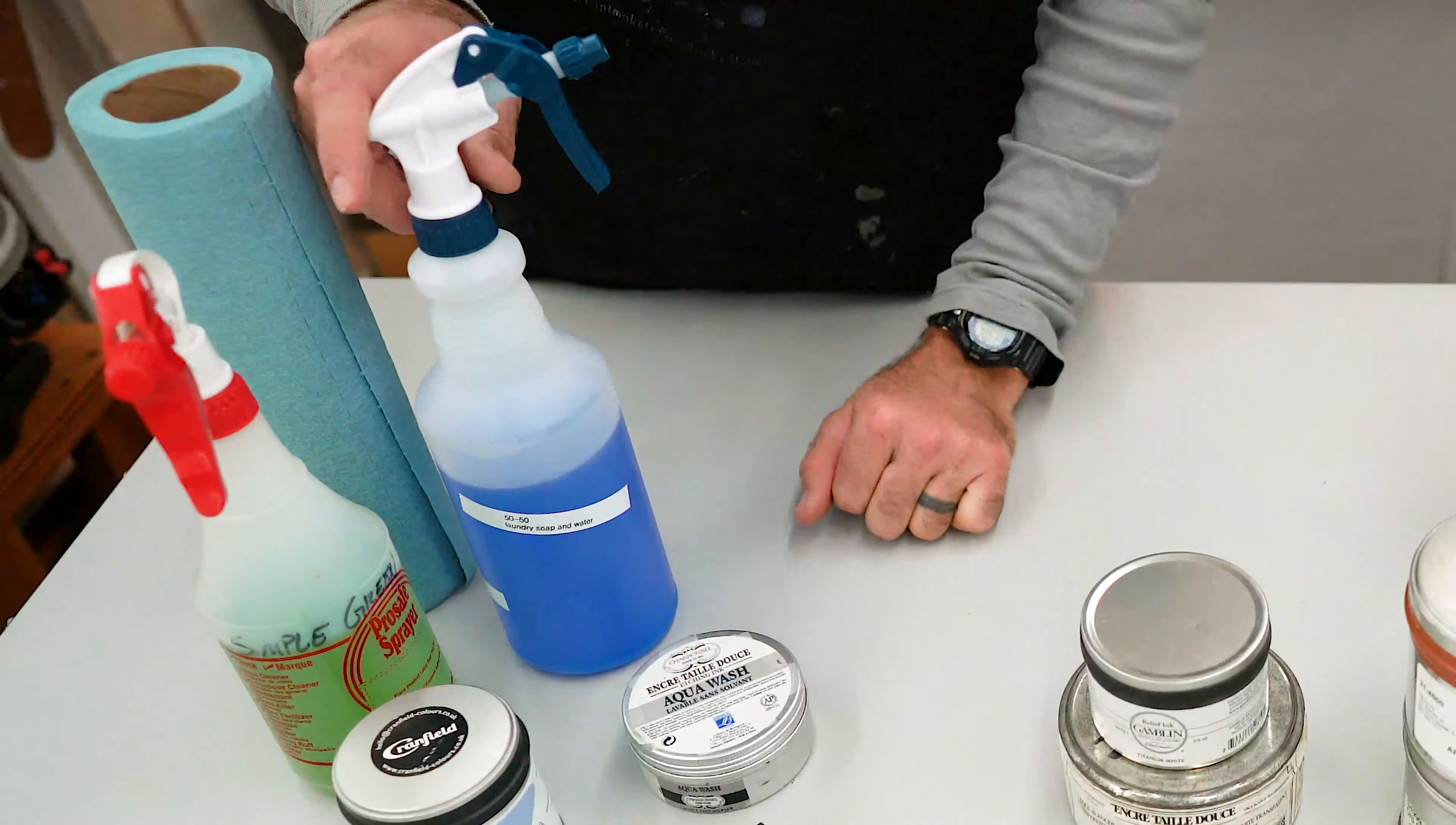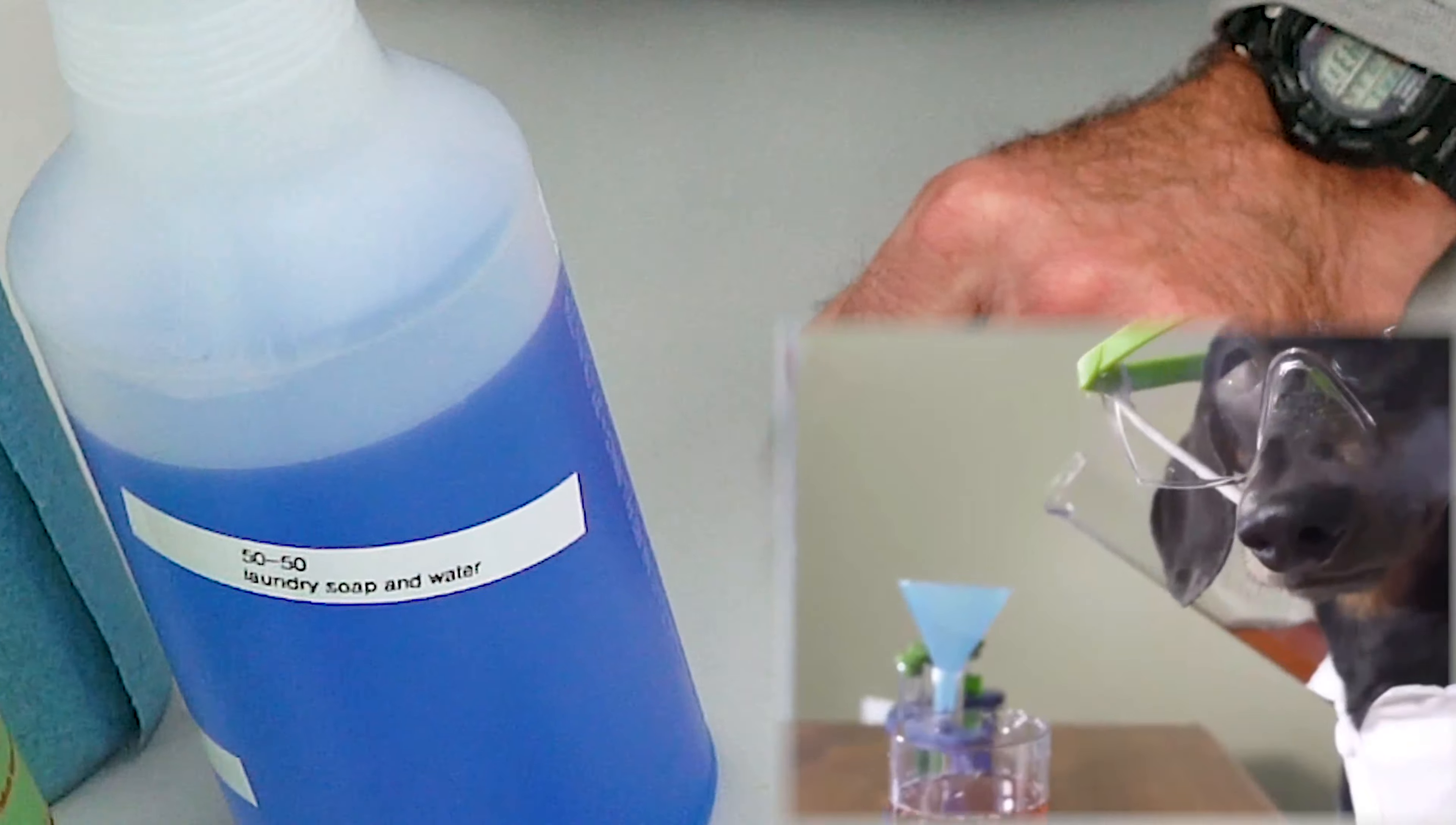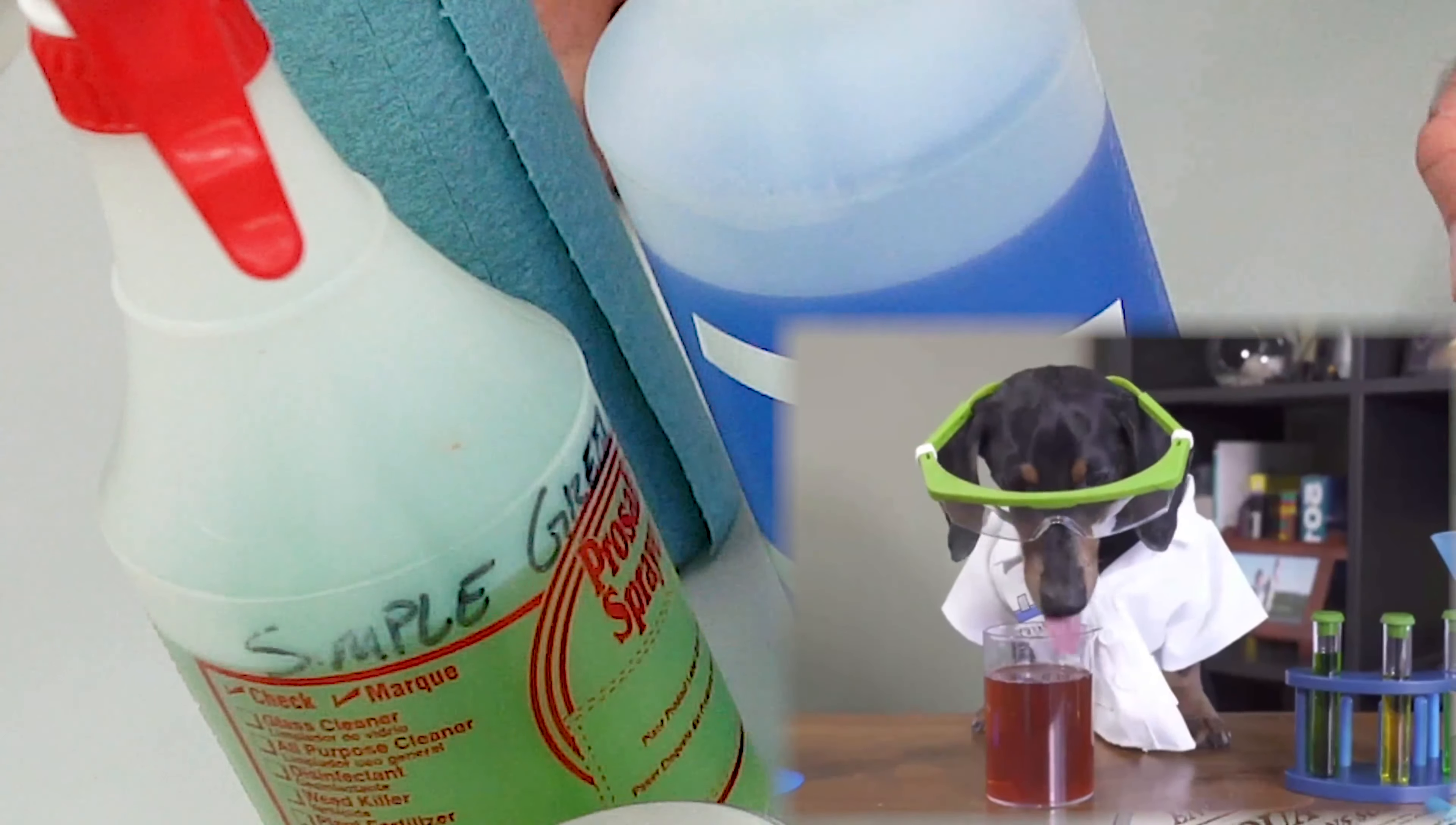We have two basic ink types: oil-based inks on your right, and non-toxic inks on your left. Next to the inks are their respective cleanup products.